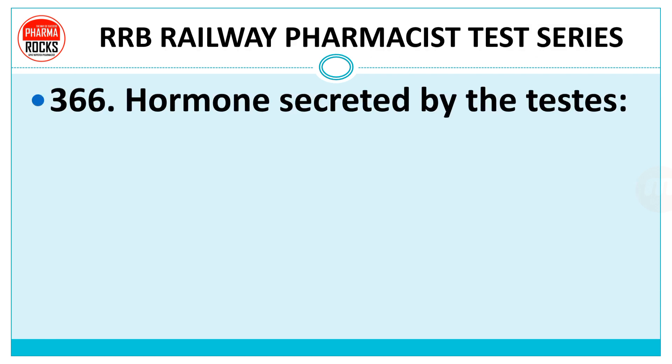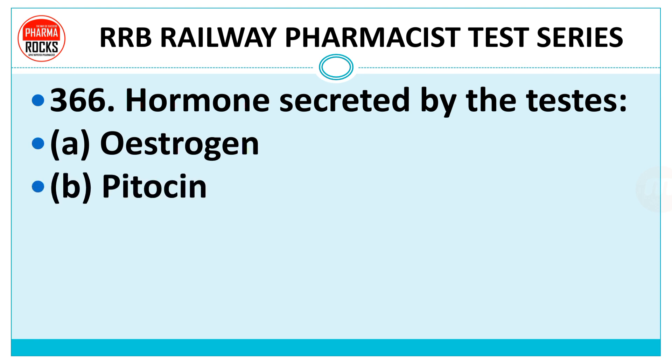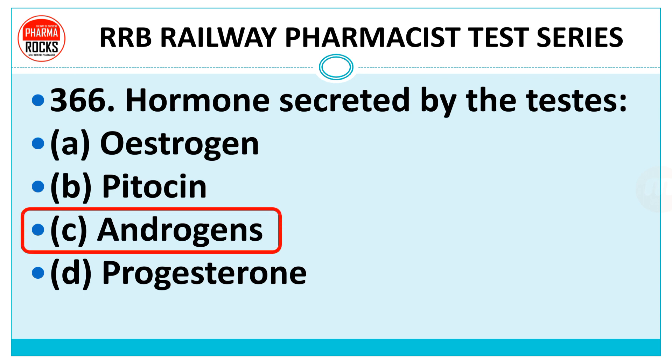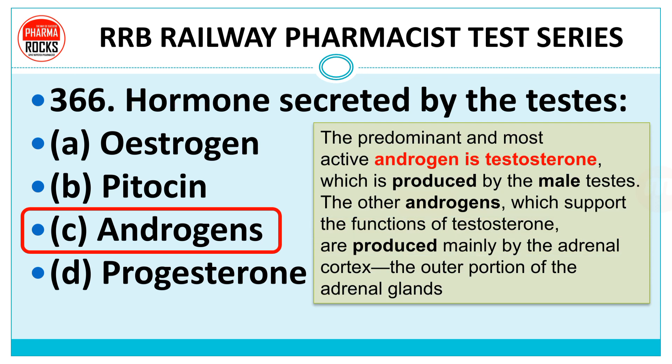Question 366: Hormone secreted by the testis. Option A: estrogen. Option B: pitocin. Option C: androgen. Option D: progesterone. Right answer is androgen. The predominant and most active androgen is testosterone, which is produced by the male testis.